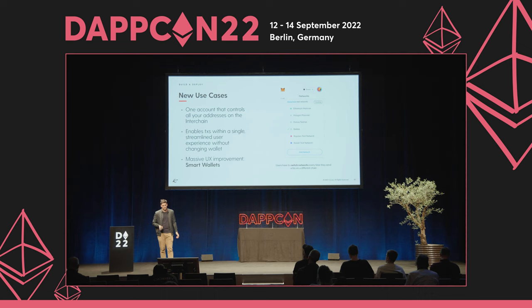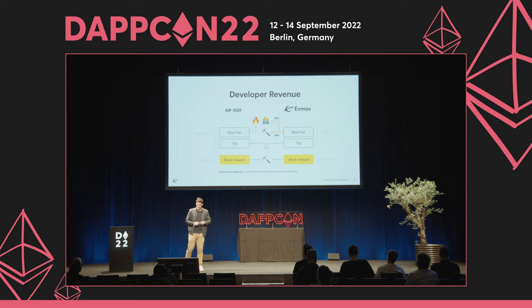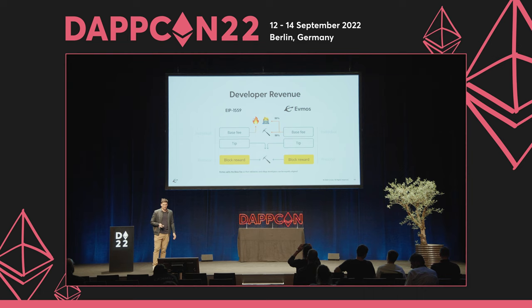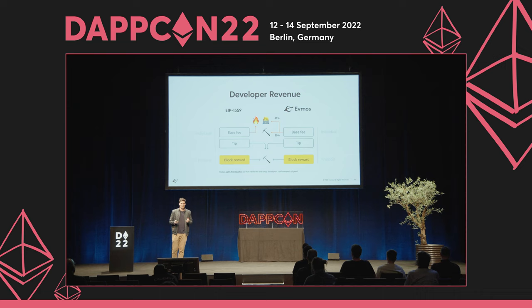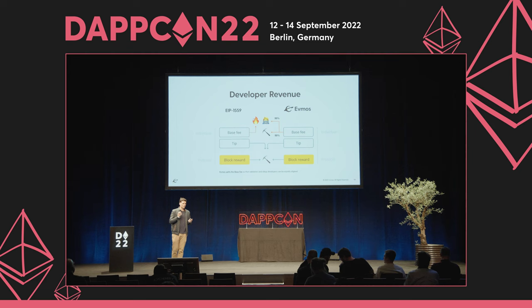Developer revenue: instead of burning the EIP-1559 base fee, Evmos allocates it as developer revenue by splitting the base fee 50-50 between validators and developers. So every time a user is interacting with a smart contract on Evmos that has been registered by the developer team, the developer team gets 50% of those transaction fees. This completely changes the paradigm of how applications earn revenue and changes the strategy from deploying to multiple chains into a seamless interchain strategy — deploy on Evmos first and then connect to all these different chains via interoperability.